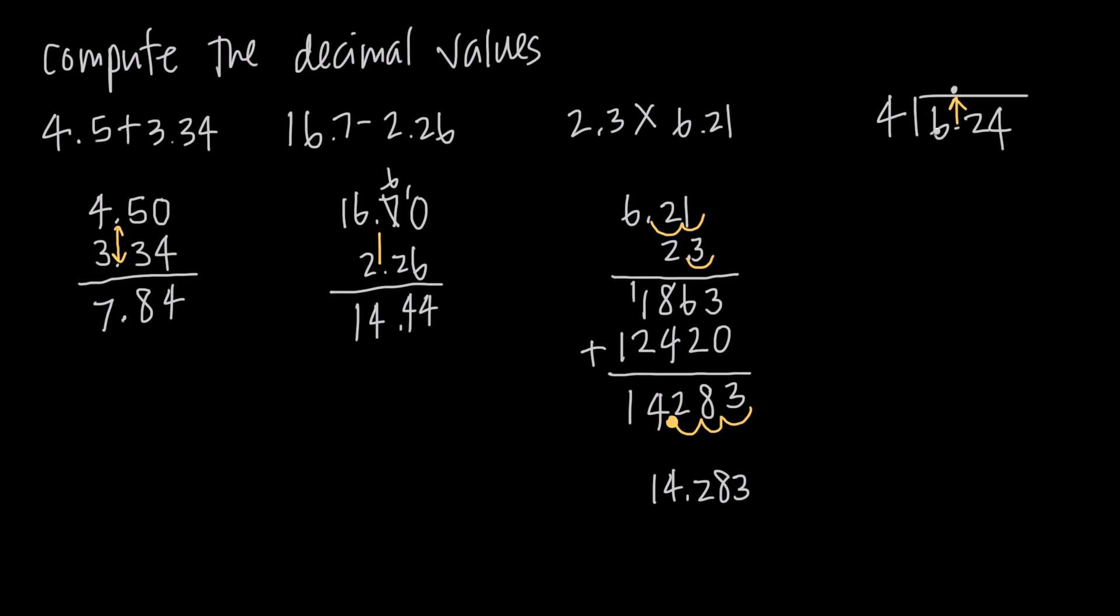So 4 goes into 6 one time. 1 times 4 is 4. 6 minus 4 is going to give us 2. We bring the 2 down. 4 goes into 22 five times. So we put the 5 there. 5 times 4 is 20. When we subtract, we get 2.